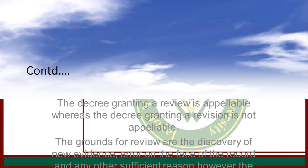The decree granting a review is appealable, whereas a decree granting a revision is not appealable. The grounds for review are discovery of new evidence, error on the face of the record, and any other sufficient reason. However, the ground for revision is a jurisdictional error by the lower court.